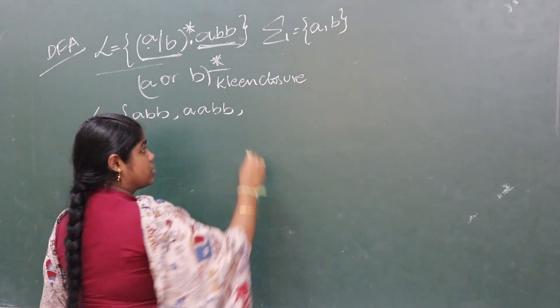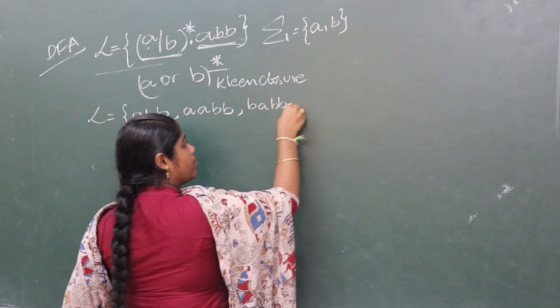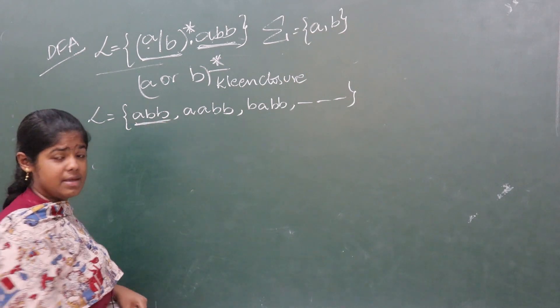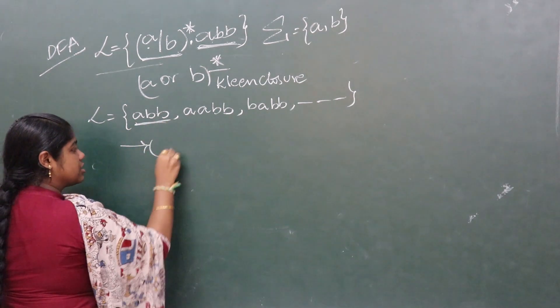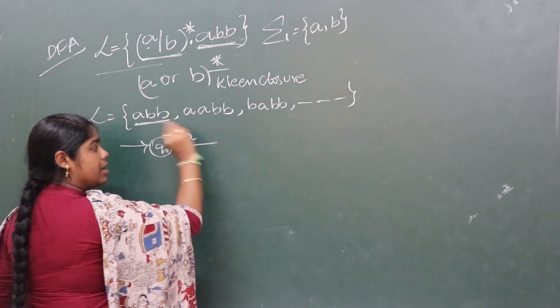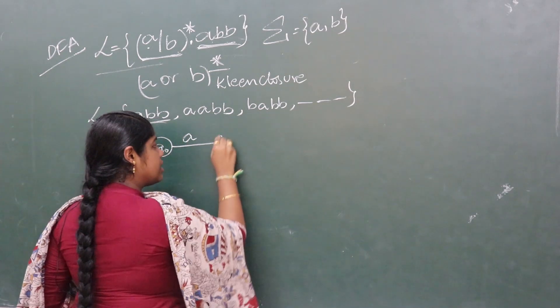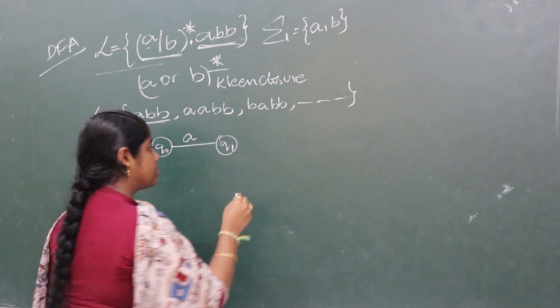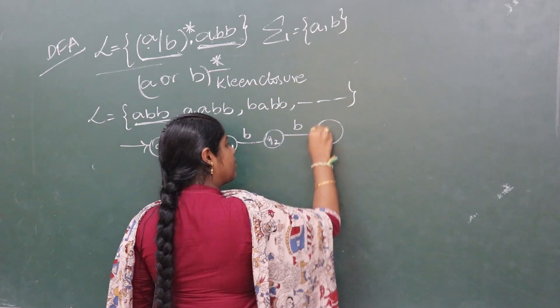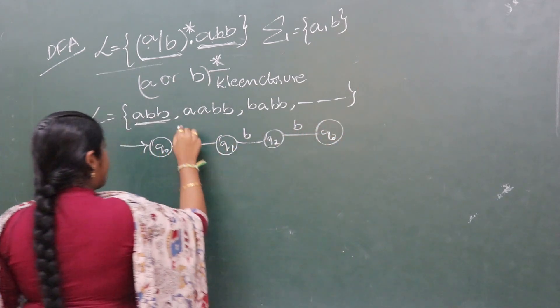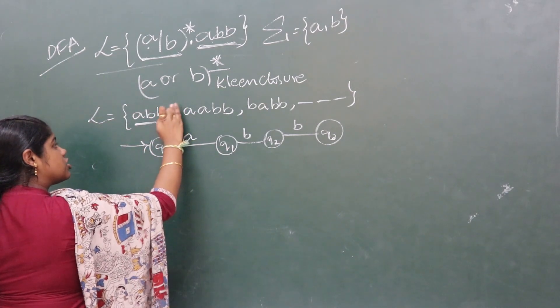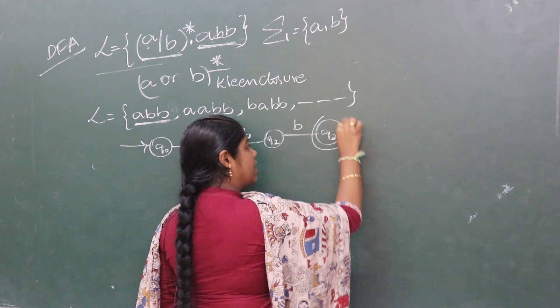B single alphabet gives BABB, double B, triple B, and so on. Let's consider the string ABB. ABB is the first transition from the starting state Q0. With input A, we go to Q1 state. With input B, we reach Q2 state. With another B, we reach Q3 state. Since we have no other characters to transition, Q3 is the final state.